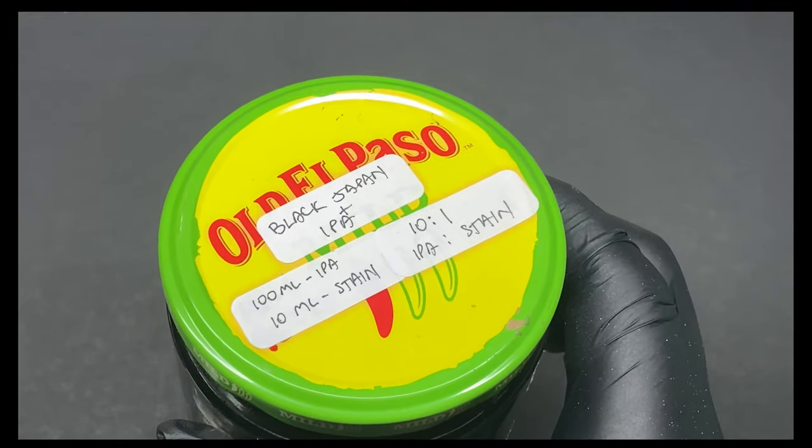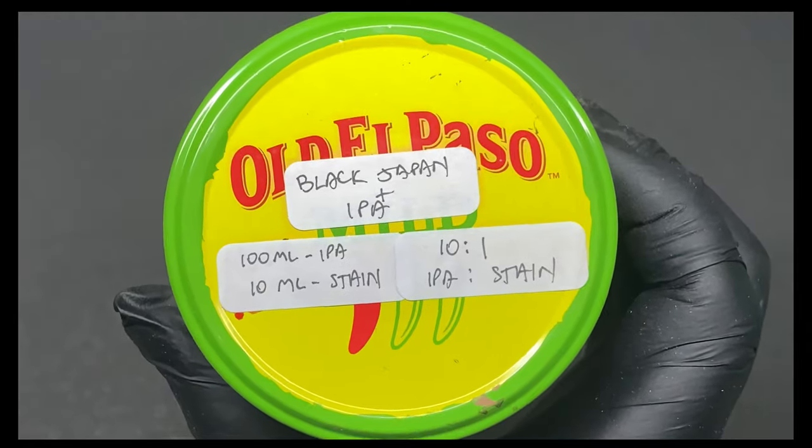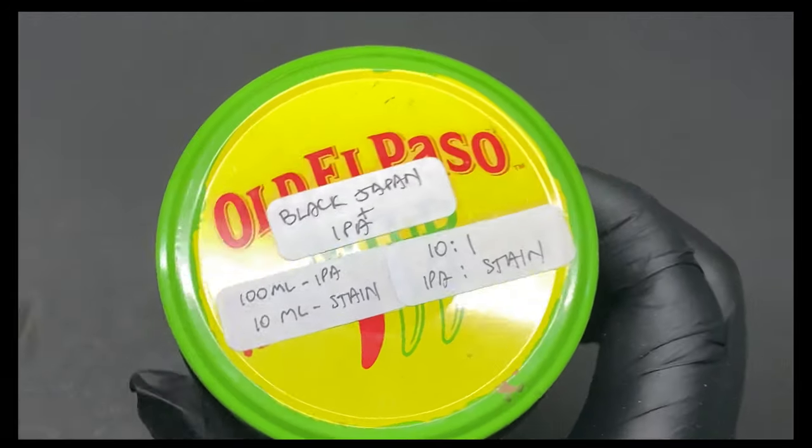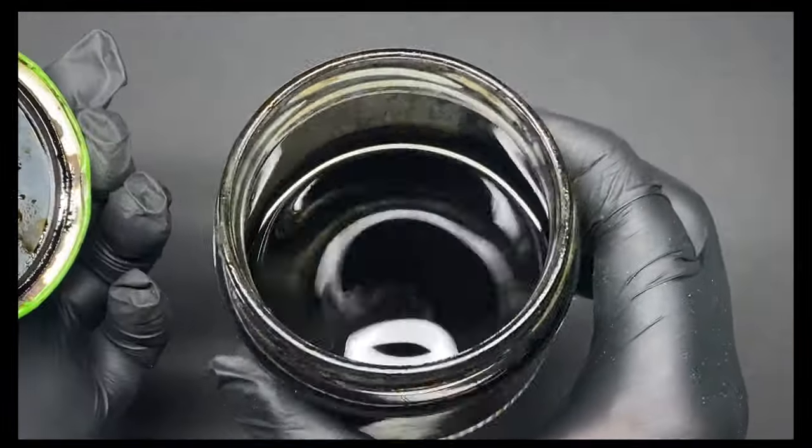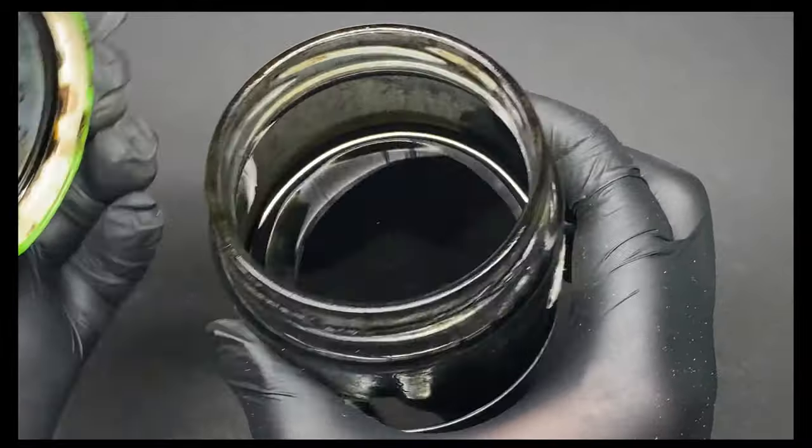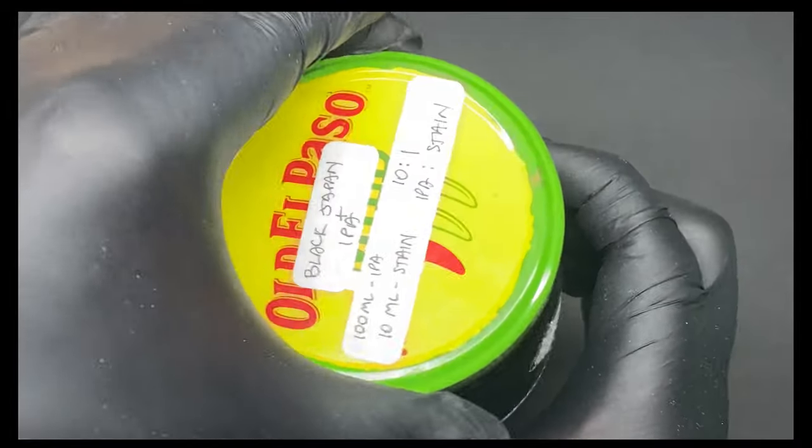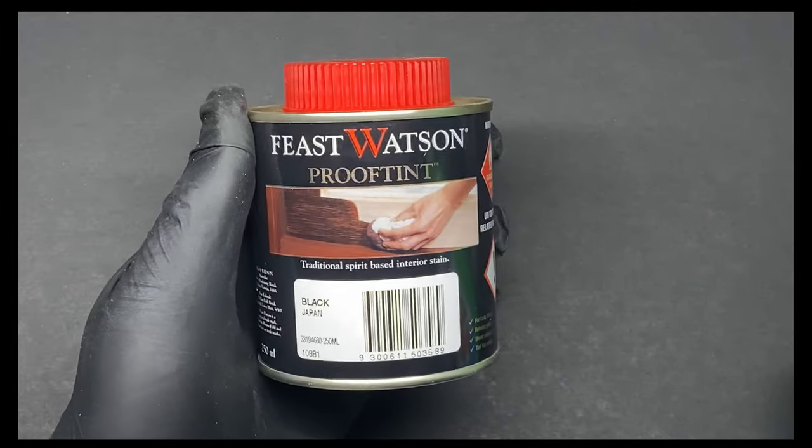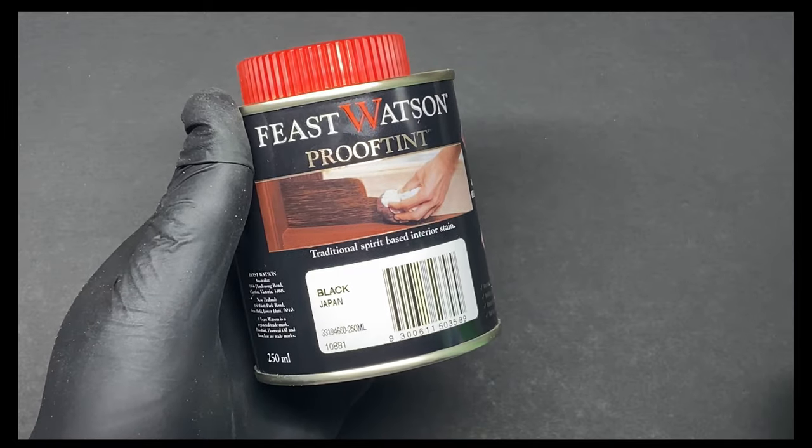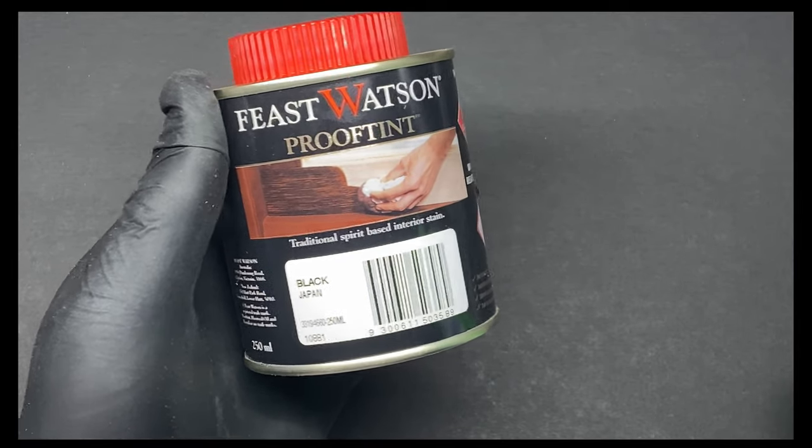No, I haven't been sponsored, but this is just an old jar to hold my stain mixture. I use a wood stain color called black japan, which I dilute with some IPA. I use a ratio of one part stain to ten parts alcohol. So for this jar, that's ten mils of stain for the hundred mils of alcohol. This 250 mil tin of stain should last me my lifetime of modeling.